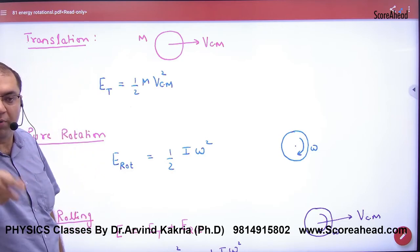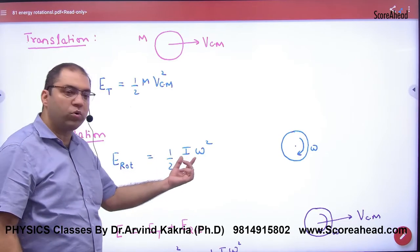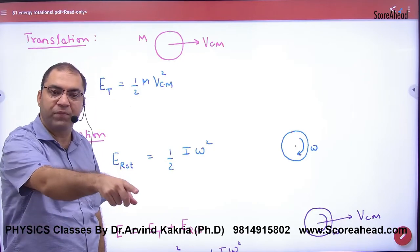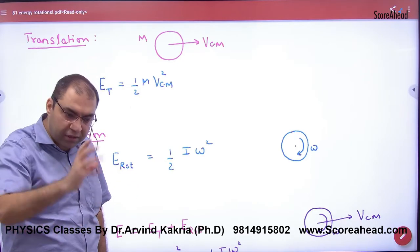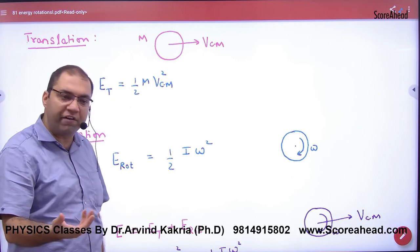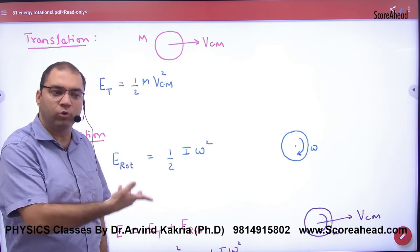If a disk is rotating, then the formula is half mr square. If a sphere is rotating, 2 by 5 mr square.